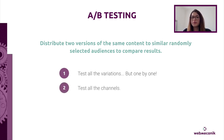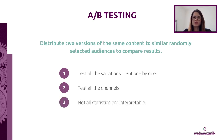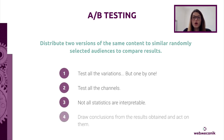Second, test all channels — A/B testing works on emails, landing pages, social networks, or SMS. The more tests you do, the more you'll be able to increase your results. Third, not all stats are interpretable — not all tests produce an understandable result. Make sure all parameters are identical except for the variable you want to analyze, and audiences must be similar and large enough to interpret results. Fourth, draw conclusions from the results obtained. Each result can have an impact on the decision-making process of your communication construction.